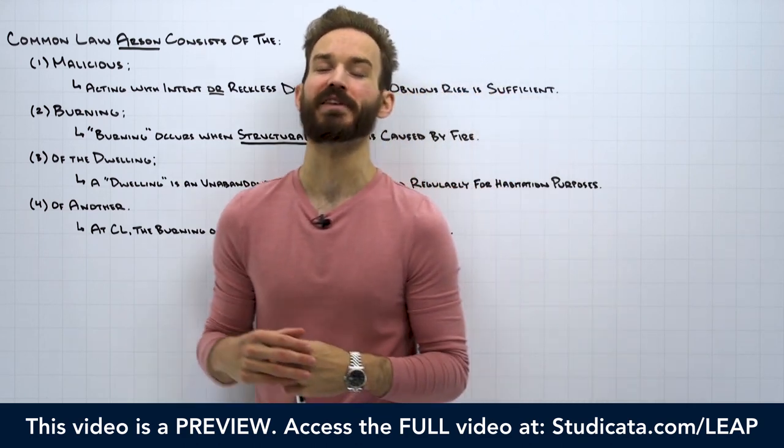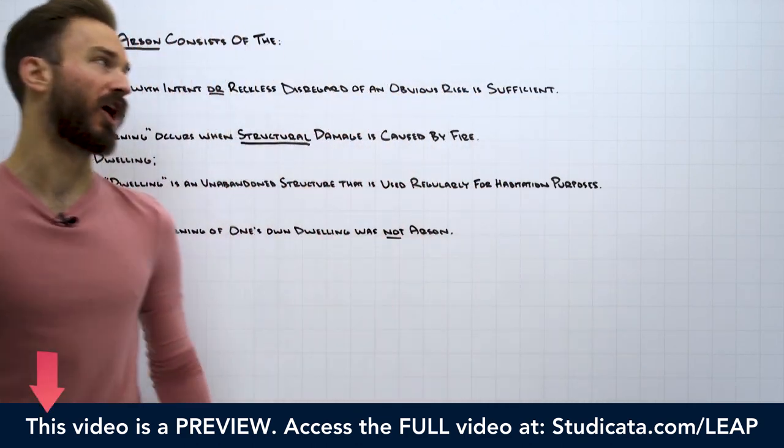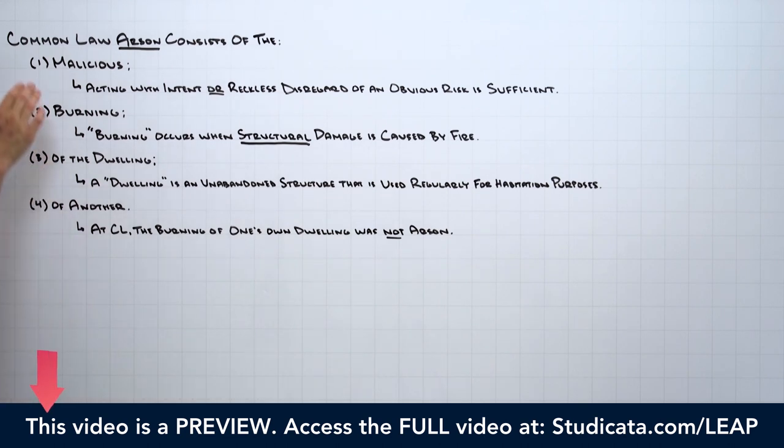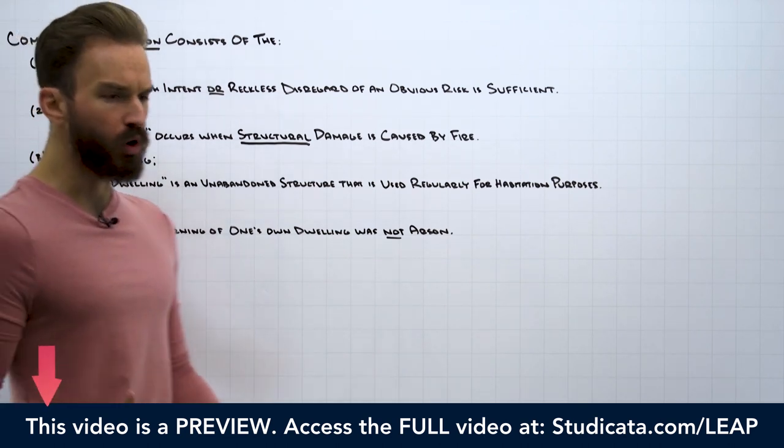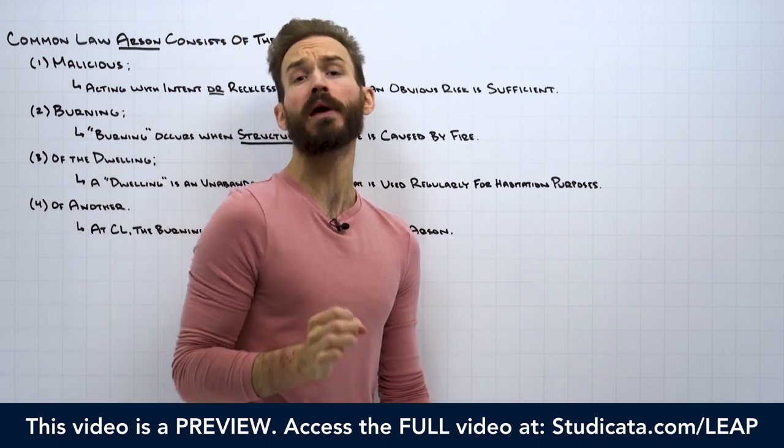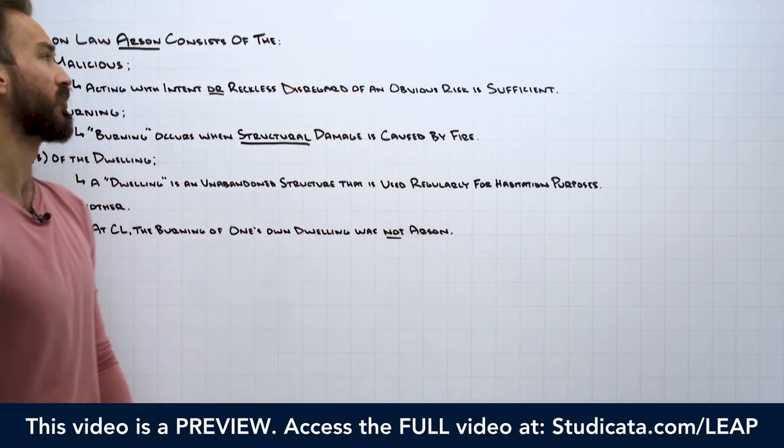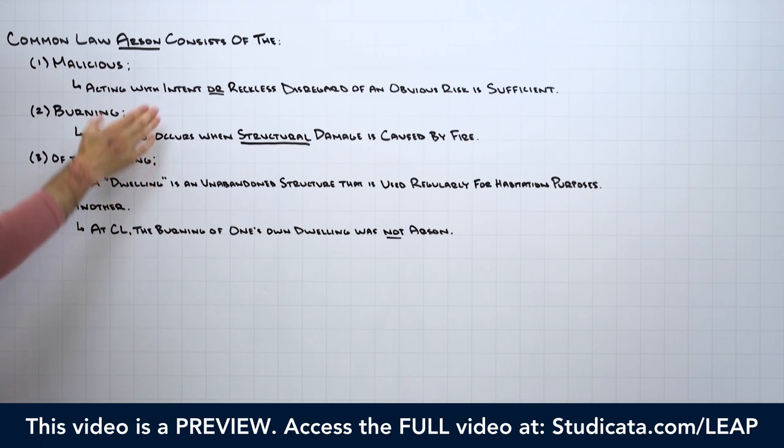In this lesson, we're going to go over the elements of common law arson, which consists of the malicious burning of the dwelling of another. Four really straightforward elements. We'll be able to get through this lesson fairly quickly.